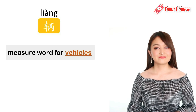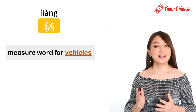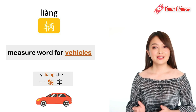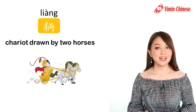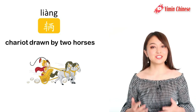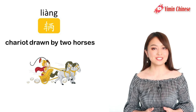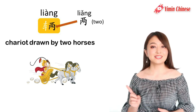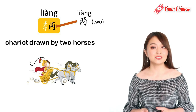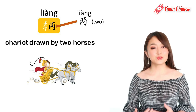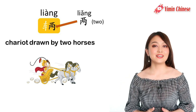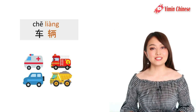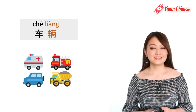The next measure word is 辆 (liàng). It's the measure word for cars and vehicles. The character 辆 itself originally meant a chariot drawn by two horses — a kind of vehicle used in ancient warfare or racing. That's why you see the character 量 within it, drawn by two horses. Nowadays we still see it in the word 车辆, which means vehicle.